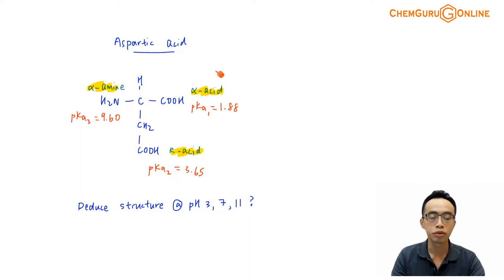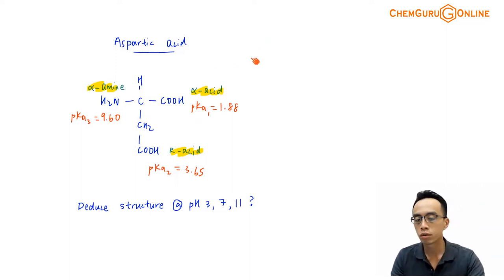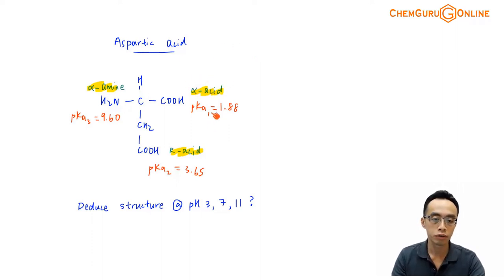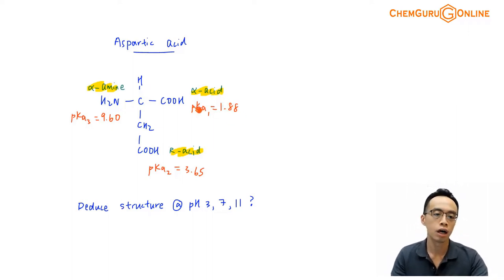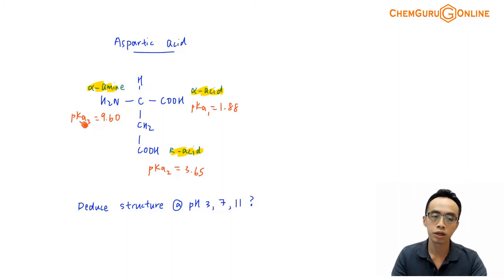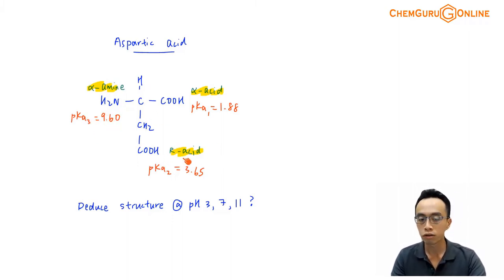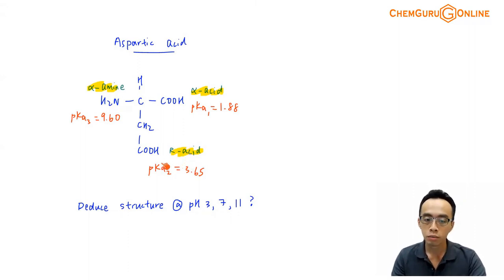Aspartic acid is an alpha amino acid. We have three functional groups with a pKa value. We have our alpha acid, pKa1, which is 1.88. Then we have our alpha amino group, pKa3, which is 9.60. And we have an acid functional group inside the R group — let's call this the R group acid — pKa2, which is 3.65.